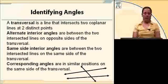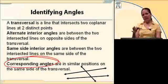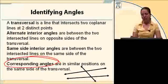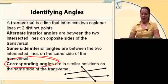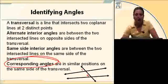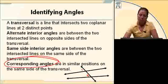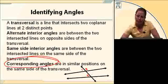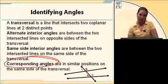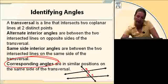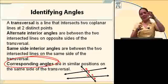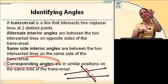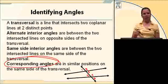Corresponding angles are in the same location at each intersection. Angle one is in the upper left, and so is angle two. Angle three is upper right, and so is angle four. Angle five is lower right, and so is angle six. Basically, if you can slide these angles over, whatever is in the same position — those are corresponding angles.